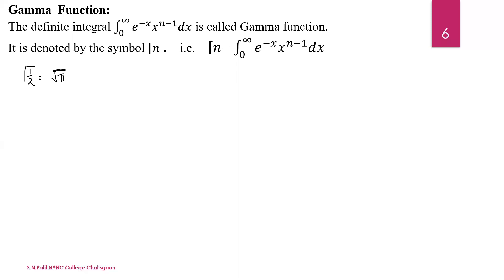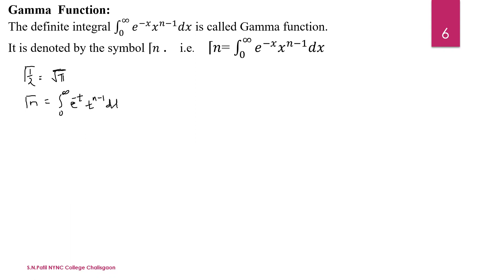We have the gamma function: gamma of n is the integration from 0 to infinity of e to the power minus t, times t raised to n minus 1, with respect to t. Call this equation number 1.